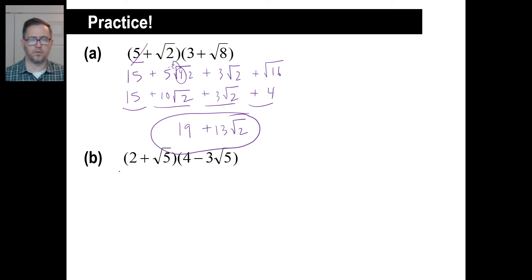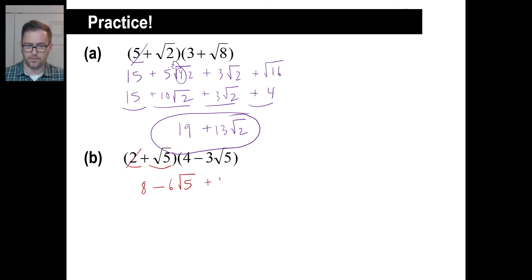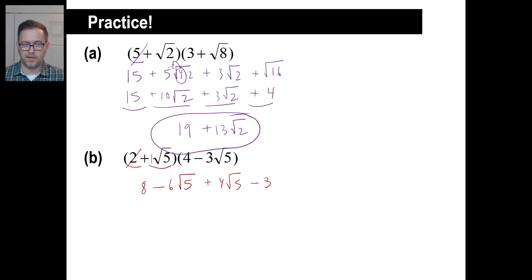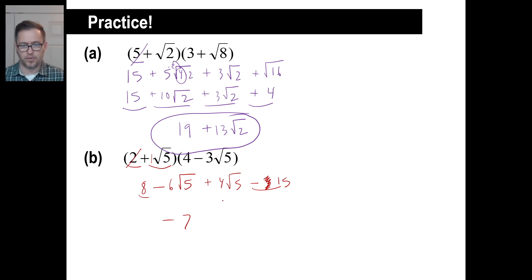Give B a whirl. Let's take care of 2 first: 2 times 4 is 8. Then 2 times negative 3 — that's negative 6 square root of 5. Then square root of 5 times 4 is 4 square root of 5. A plus times a minus gives a minus: 1 times 3 is 3, and the square root of 5 times the square root of 5 is the square root of 25, which is 5. So 3 times 5 is 15. We have 8 minus 15, which is negative 7. Then negative 6 square root of 5 plus 4 square root of 5 is negative 2 square root of 5. That's the answer.